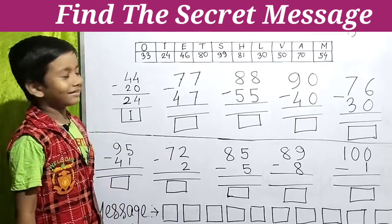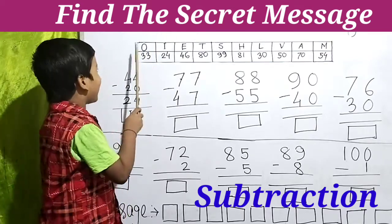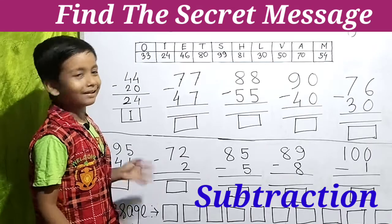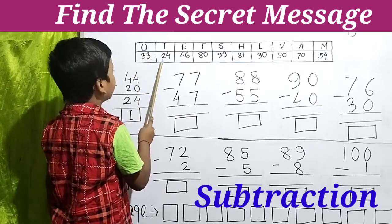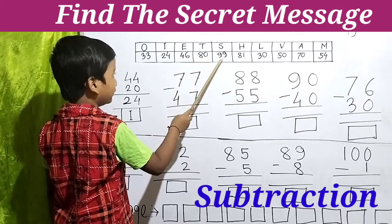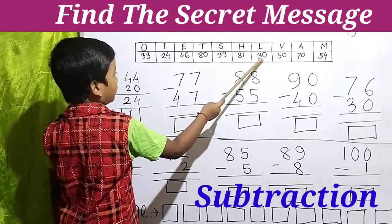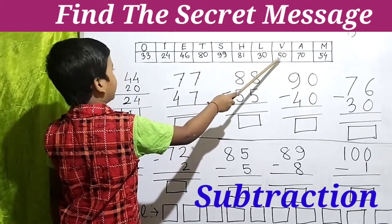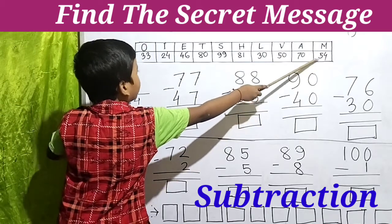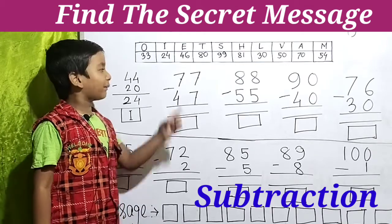Look at friends. In this box there are some numbers. Above the numbers there are some letters. Which number gives which letter? Let's see: 33 means O, 24 means I, 46 means E, 80 means T, 99 means S, 81 means H, 30 means L, 50 means V, 70 means A, 54 means M. So let's learn the subtractions.